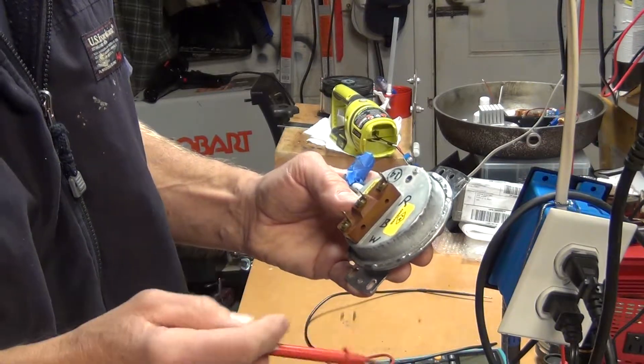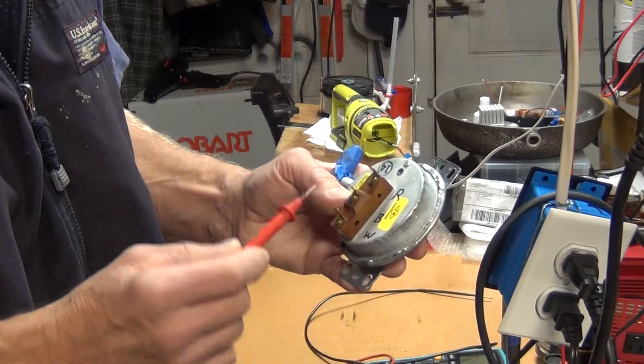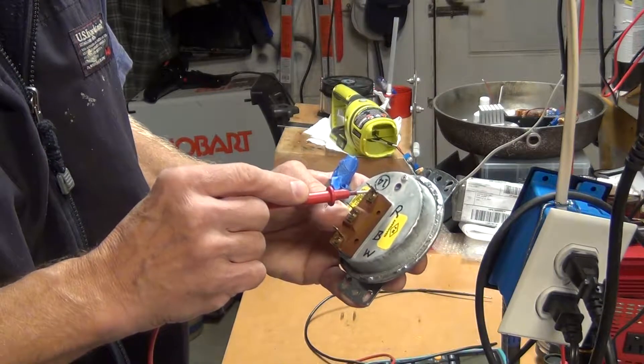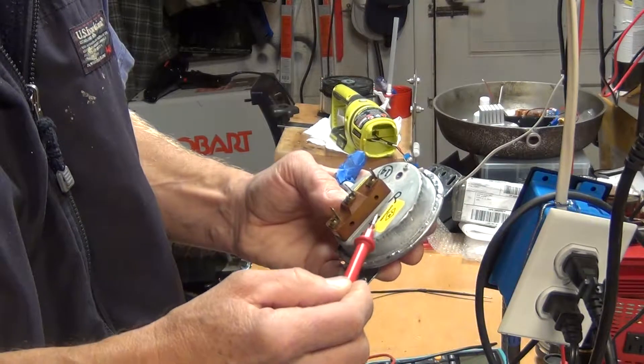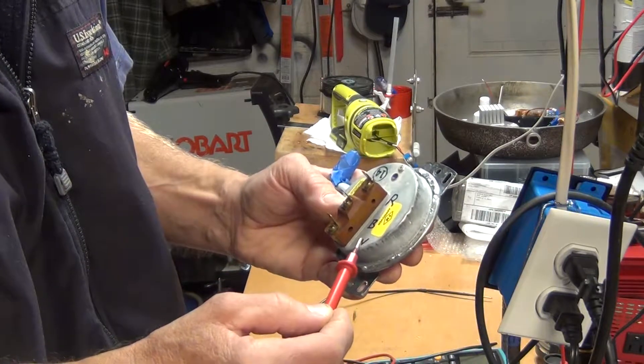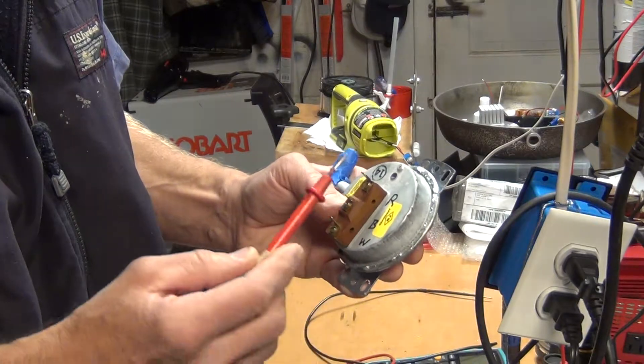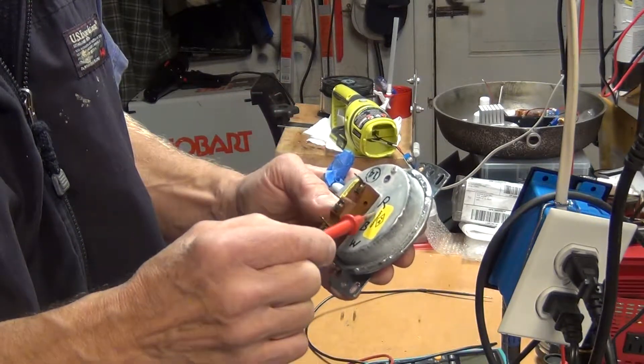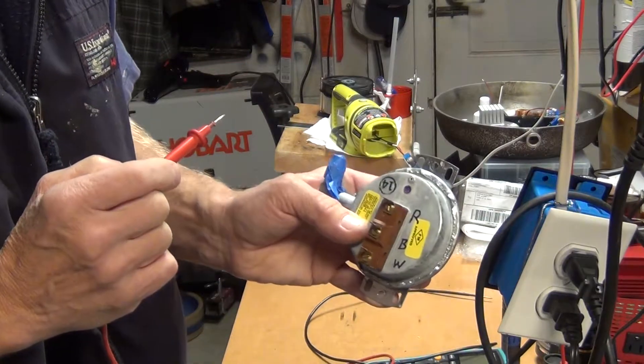Now after this receives the vacuum from the inducer fan, the contact will close between white and black. So now the circuit is going from red to white to black, feeding the furnace.